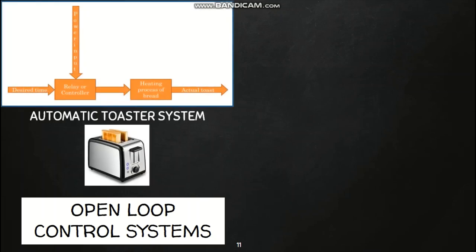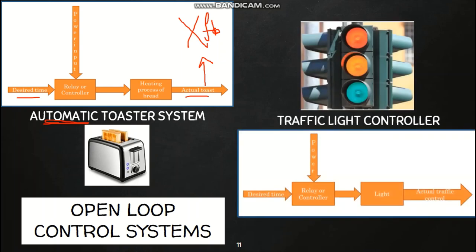Examples of open loop control systems: the first is an automatic toaster. Despite the name 'automatic,' it is an open loop system. A desired time is set, the controller consumes power and starts heating the bread, and after a certain time delivers toast — but the quality of the toast is never measured using a feedback element, so there is no feedback, making it open loop. Similarly, a conventional traffic light controller sets a desired time and changes the light, but whether the traffic is actually being controlled is never measured, so it is also an open loop control system.